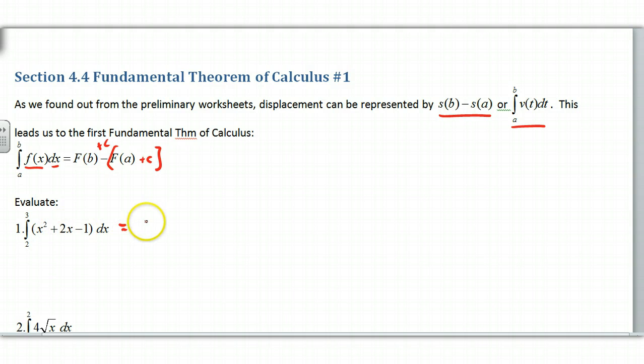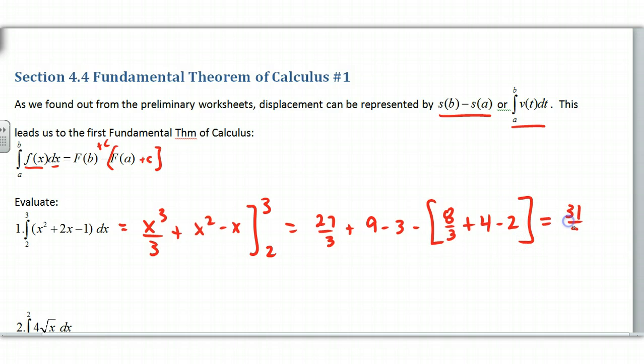All right, so if we do this, essentially we just take the antiderivative and then we evaluate from 2 to 3. What I like to do is I plug in the 3 here, 27 over 3 plus 9 minus 3. Then when I subtract, I'm going to subtract what happens when I plug in the lower limit. I like to put a square bracket. What this does for me is it reminds me, oh, you better subtract everything. So I need to distribute this value. So if I plug in 2, I get 8 thirds plus 4 minus 2. And I can find this, this is 31 thirds. So the area under the curve is 31 thirds from 2 to 3 of this function.